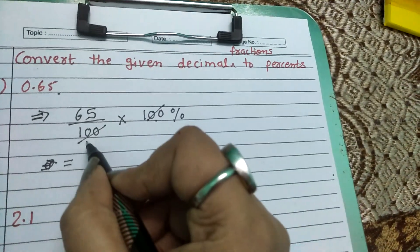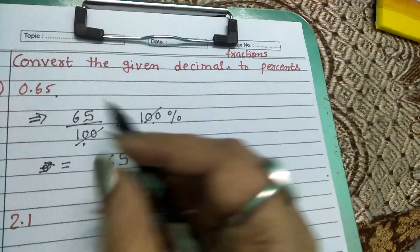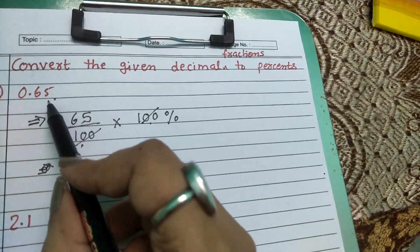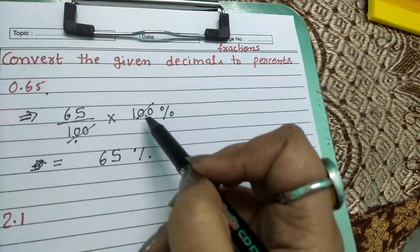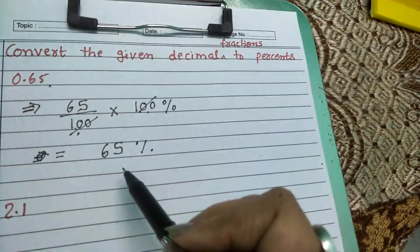So our answer is 65 percent. This is how we converted the decimal fraction to percent - we changed it to a fraction, then multiplied by 100 percent, and 65 percent is our answer.